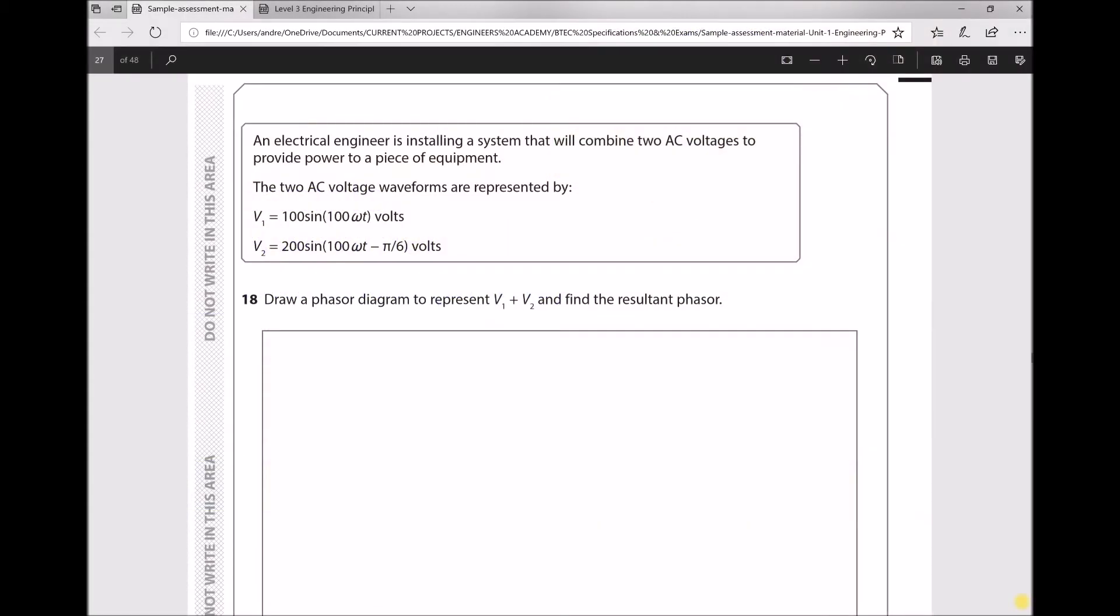Question 18 reads: An electrical engineer is installing a system that will combine two AC voltages to provide power to a piece of equipment. The two AC voltage waveforms are represented by V₁ = 100sin(100ωt) volts and V₂ = 200sin(100ωt - π/6) volts. The two voltages are out of phase. Draw a phasor diagram to represent V₁ and V₂ and find the resultant phasor.